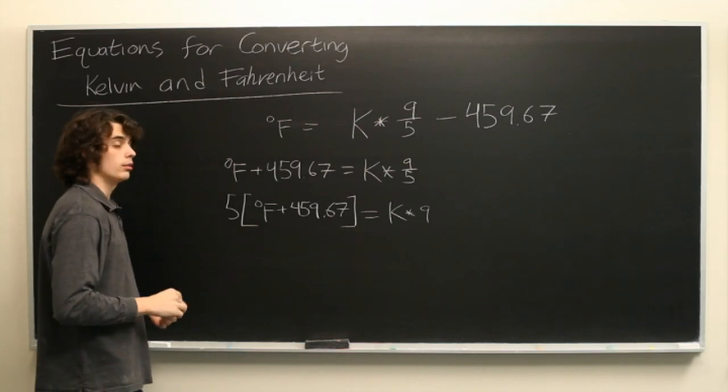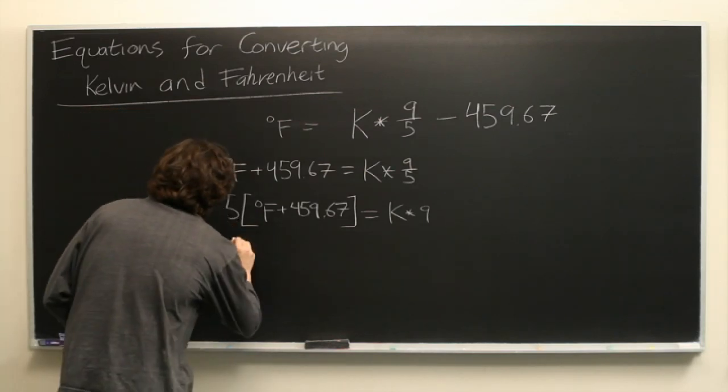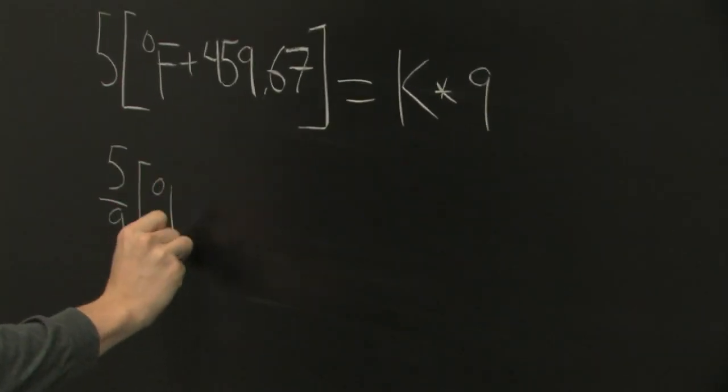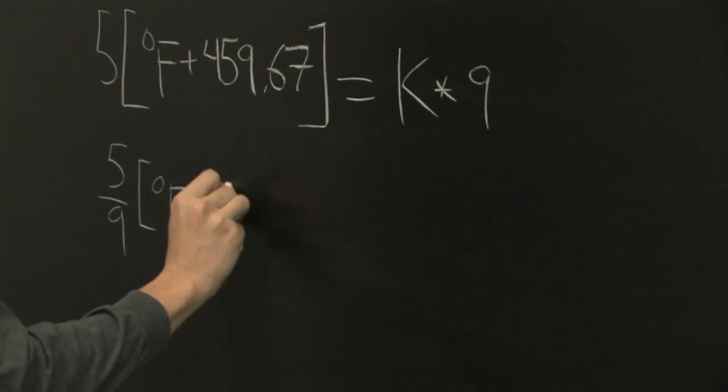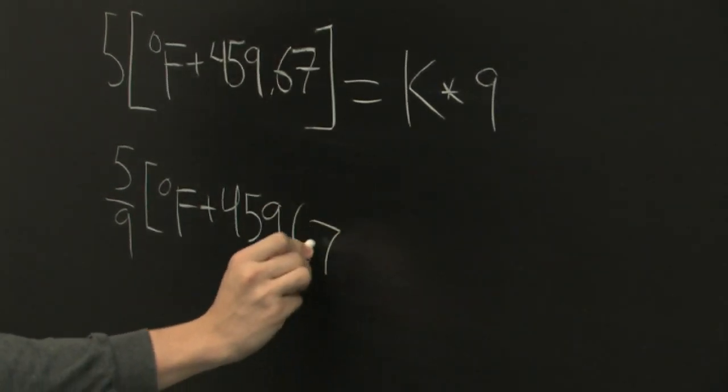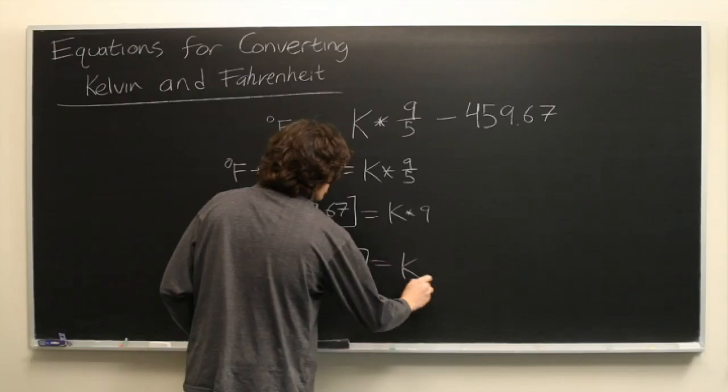And then finally we just divide by 9 on both sides. 5 over 9 times degrees Fahrenheit plus 459.67 is equal to Kelvin.